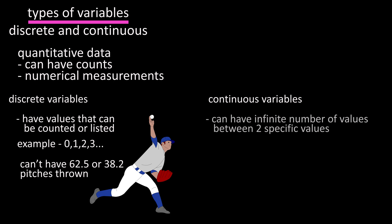Continuous variables have an infinite number of values between any two specific values, so their possible values can't be counted. For instance, time is a continuous variable.